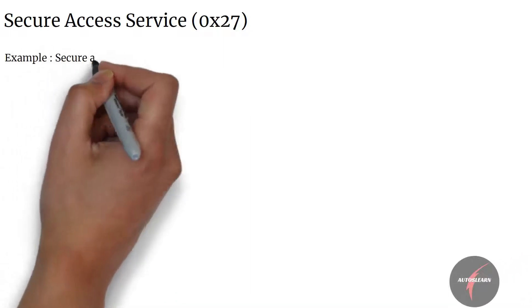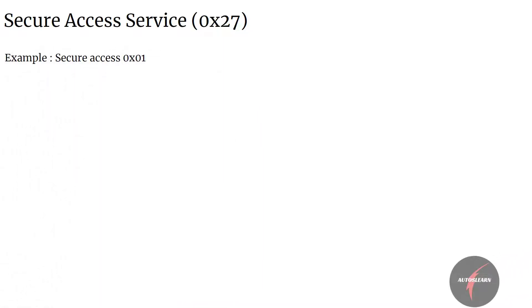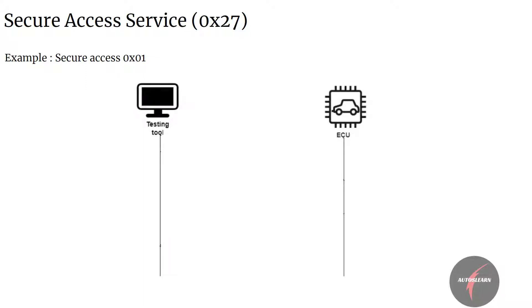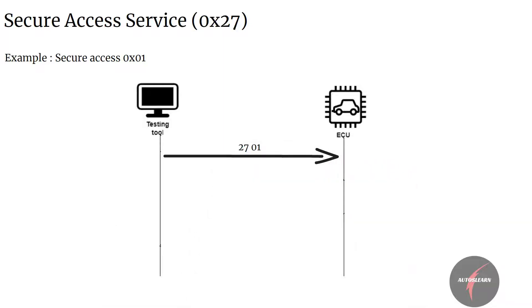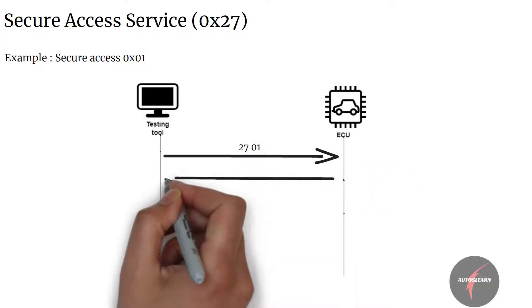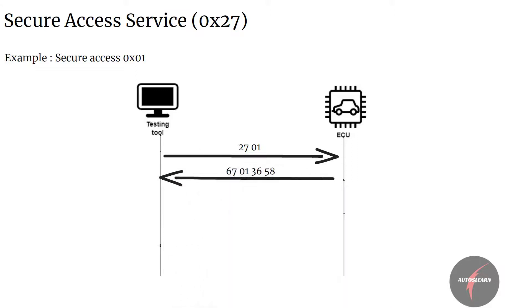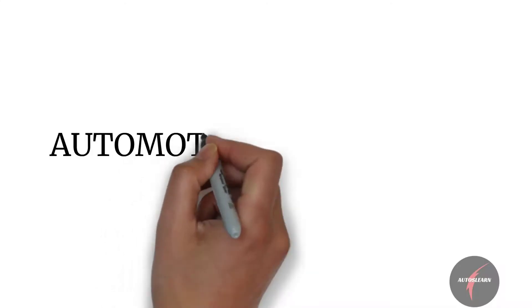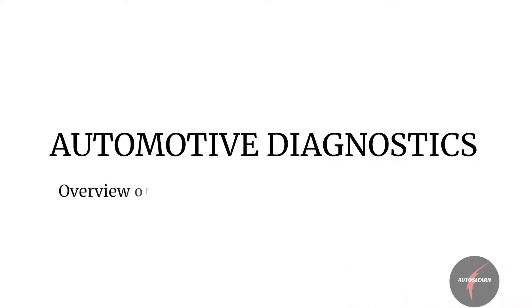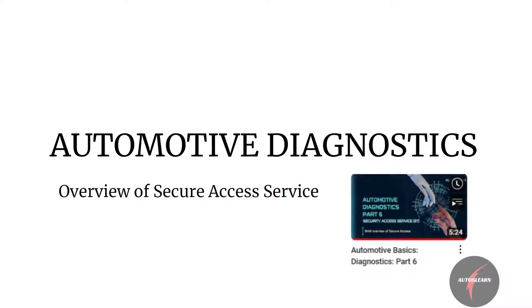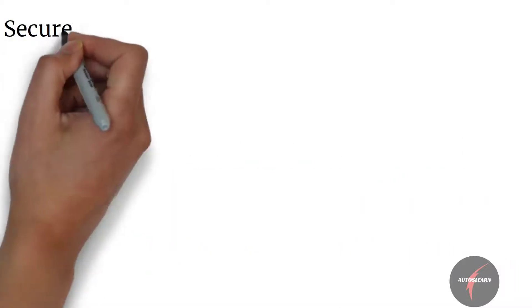Let's now look into an example where the client sends secure access 1 and unlocks the ECU for secure access. Firstly, the client sends 2701 seed request and the server responds 6701 36. In the last video we had a look into the overview of secure access service 27. Let's now dive into the details of secure access service.